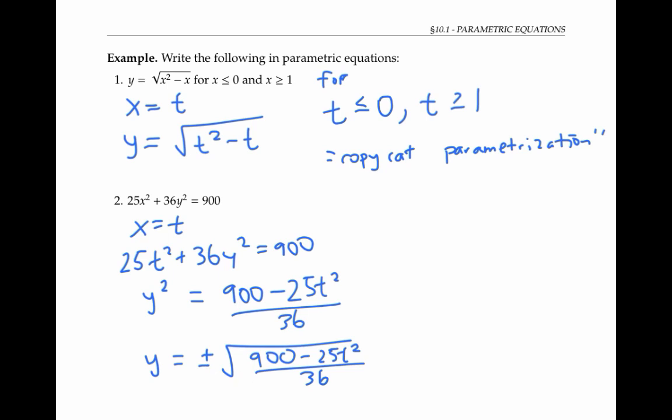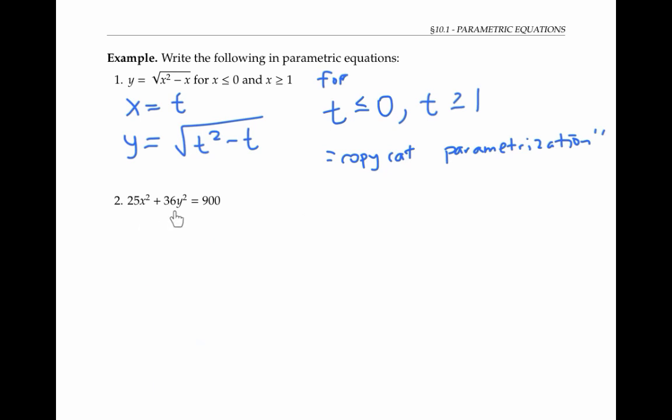Because of the x squared and the y squared, this equation is a good candidate for parametrizing using sine and cosine. In fact, if we divide both sides of the equation by 900, we get 25 x squared over 900 plus 36 y squared over 900 is equal to one, which simplifies to x squared over 36 plus y squared over 25 is equal to one.